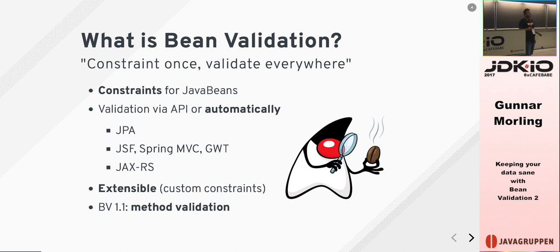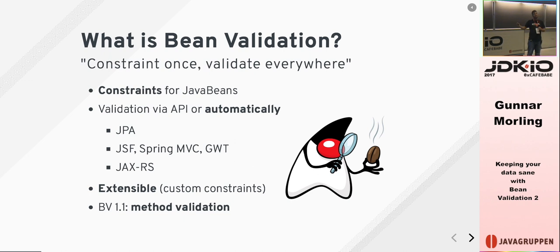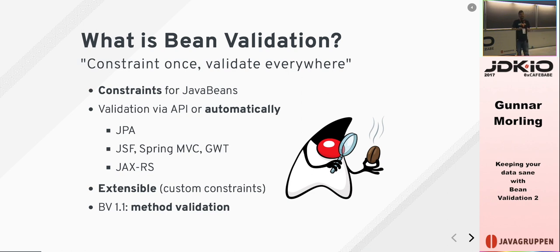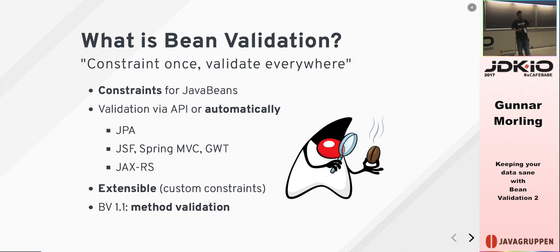So what is bean validation about? It is an API and a metamodel which allows you to put constraints on your model and then validate those constraints. Constraints are certain invariants — small checks you apply to your model. It could be simple things like: this property should never be null, this numeric property should be in a specific range, or this string should satisfy a given regular expression. There are a number of predefined constraints as part of the API, but you can also quite easily add your own custom constraints.